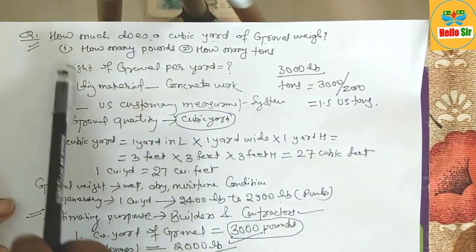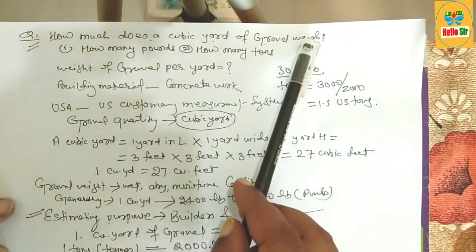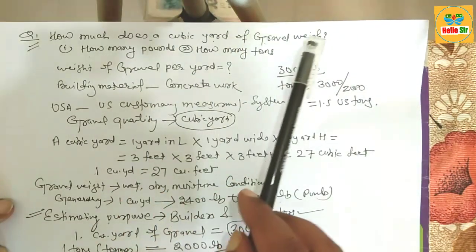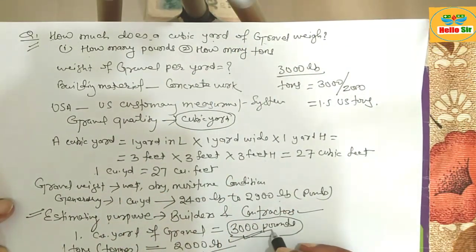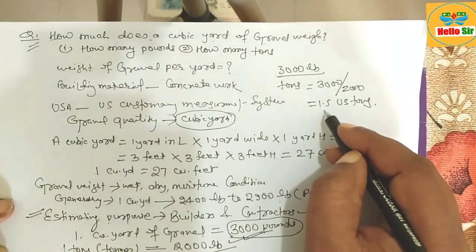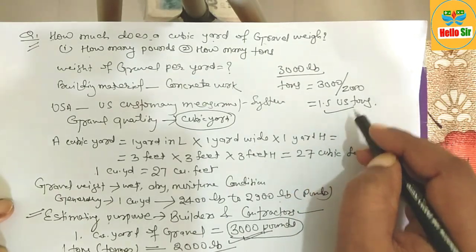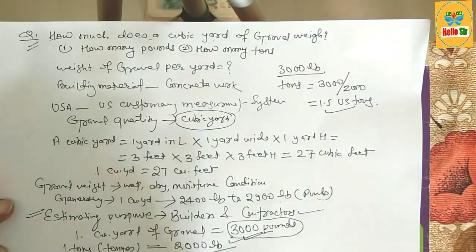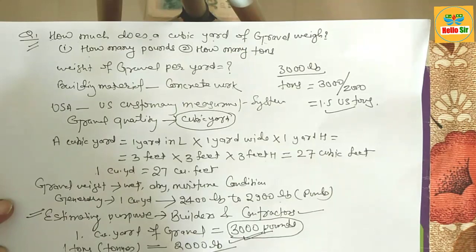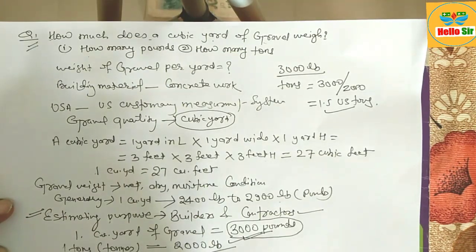So, how much does a cubic yard of gravel weigh? Around 3,000 pounds or 1.5 US tons. I hope this calculation helps you. Thank you.